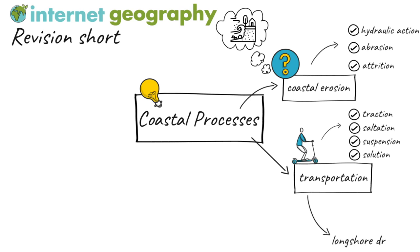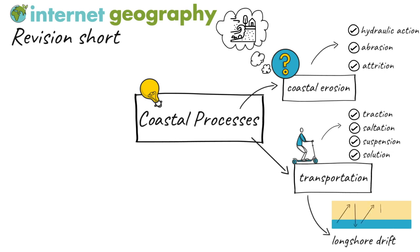Longshore or littoral drift is the movement of material along the shore by wave action. It happens when waves approach the beach at an angle. The swash, waves moving up the beach, carries material up and along the beach. The backwash, waves moving back down the beach, carries material back down the beach at right angles. This is the result of gravity.